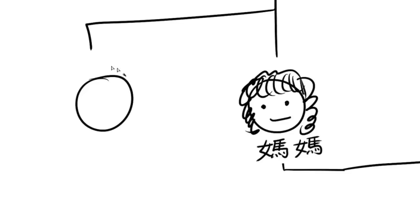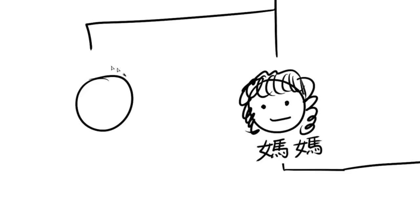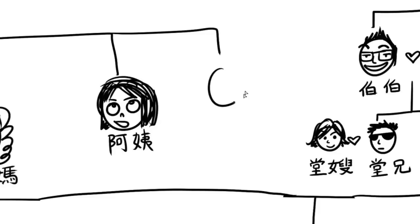Now to your mom's side. Her mom, your grandma, is your 婆婆; her dad, your grandpa, is your 外公. If she has siblings, her older brother is your 舅舅, her older sister is your 姨妈, her younger sister is your 阿姨, and whether it's her older or younger brother, they are both called 舅舅. Your uncle's wife is your 舅母, and your auntie's husband is your 姨丈.